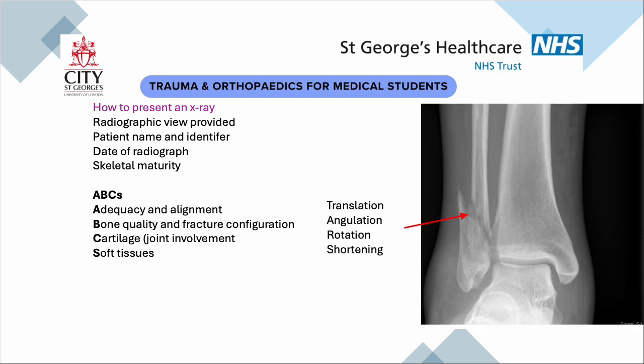Here is a fracture of the fibula. You can describe it as a fracture of the distal fibula. It is extra-articular. The bone has either an oblique or possibly a short spiral fracture. There is a little bit of translation, probably 25 to 50 percent, going laterally. There is probably not much angulation, no real rotation, and there is a little bit of shortening — probably five millimetres of shortening on this one.